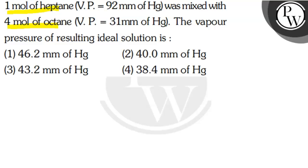Option 1: 46.2 mm of Hg. Option 2: 40 mm of Hg. Option 3: 43.2 mm of Hg. Option 4: 38.4 mm of Hg. What is the key concept here?